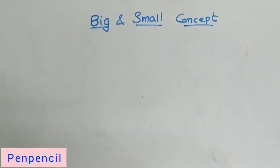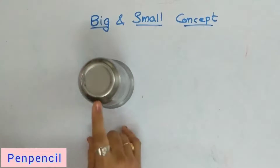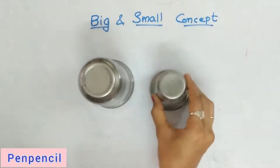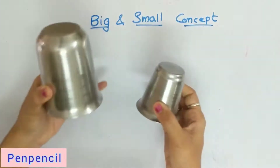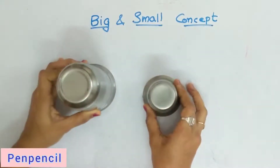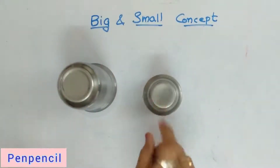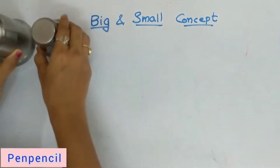What is a big object and what is a small object? We'll learn with the help of objects. Come on — this is a big glass, this is a small glass. See how the size differs: this is big, this is small. Big, small.